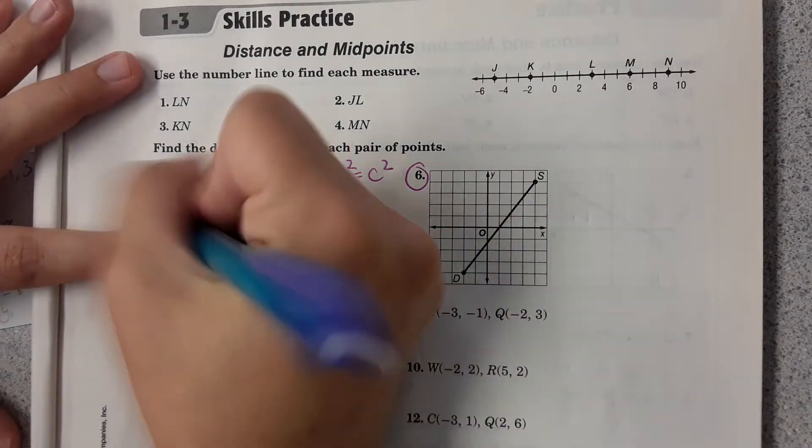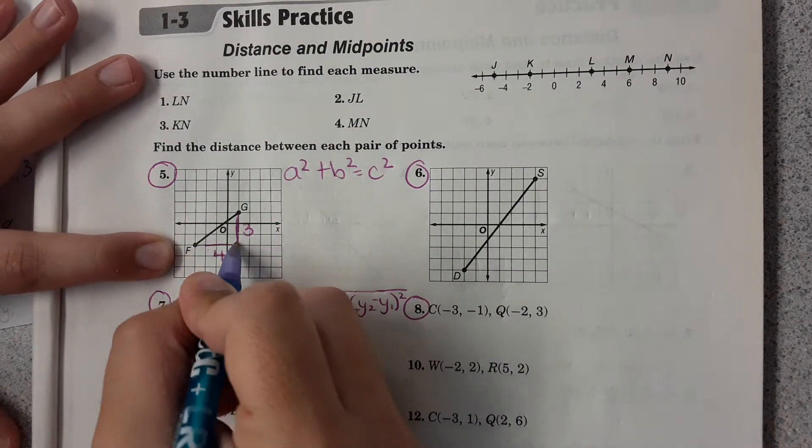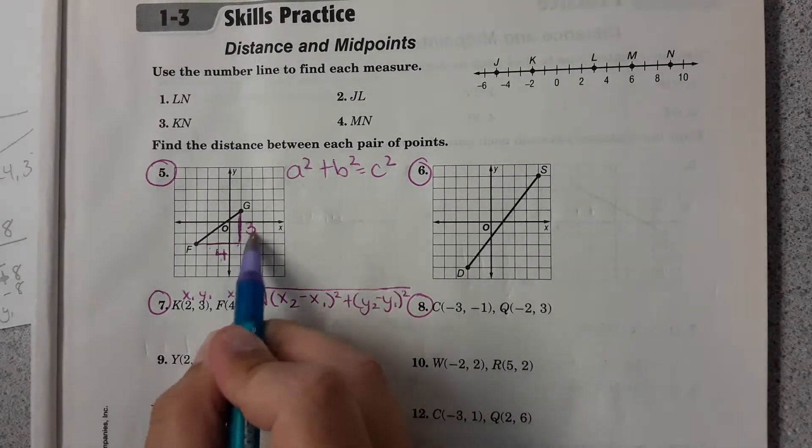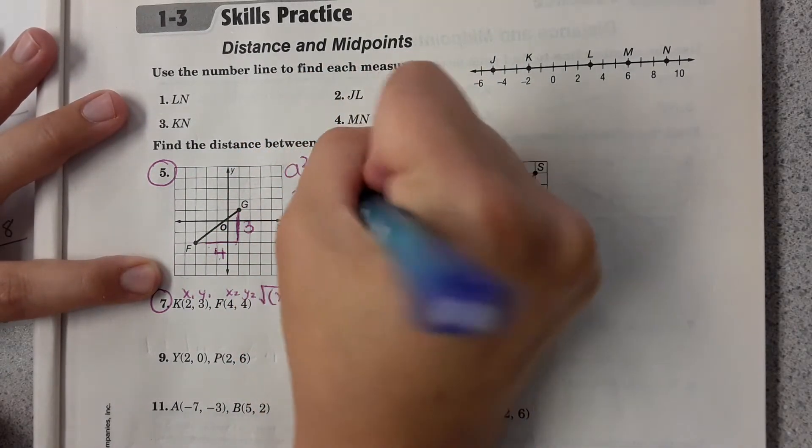Pythagorean theorem was the easiest way to solve this. So just counting those units, 4 units here, 3 units here. This is A and B. A and B is interchangeable, so it didn't matter whether you did 3 squared plus 4 squared or the other way around.